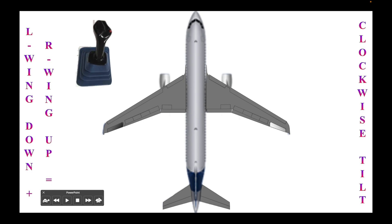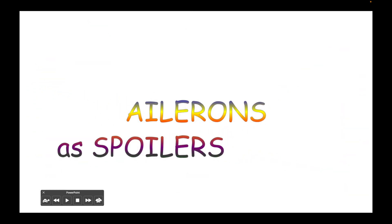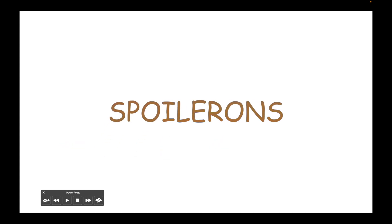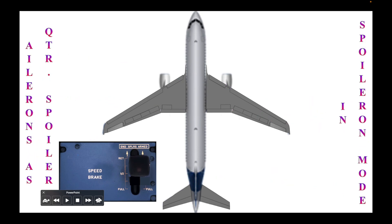Aside from the traditional primary flight controls, the Airbus 320 can also combine functions with secondary flight controls such as flaps or spoilers. Ailerons that act as spoilers are called spoilerons. These elements will move by adjusting the speed brake lever position. Traditionally, the inward wingtip elements will move upward depending on the degree that you raise the lever. The more backward you push the speed brake lever, the higher the ailerons will go up.